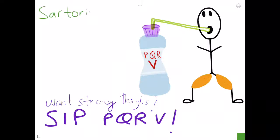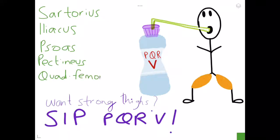S is for Sartorius, I is for Iliacus, and then we have P which is for Psoas. Then we have another P which is Pectineus, then we have Q which is Quadriceps Femoris, and then we have R for Rectus Femoris.